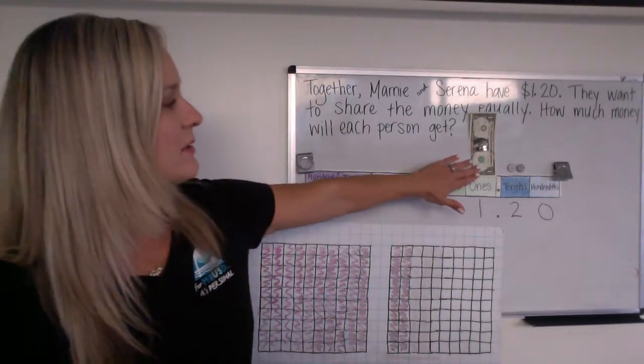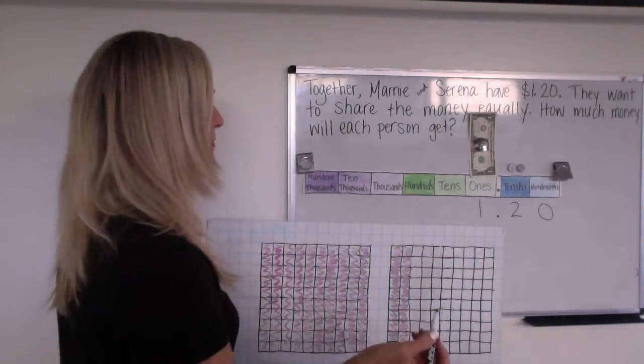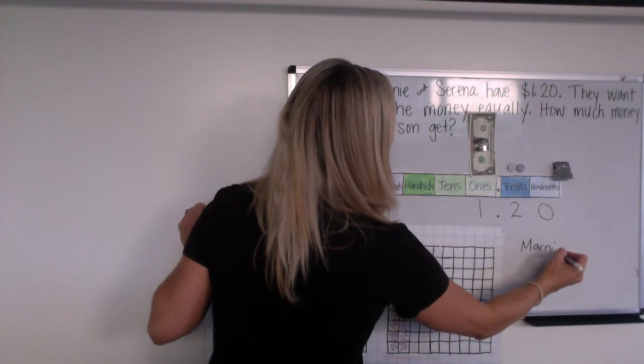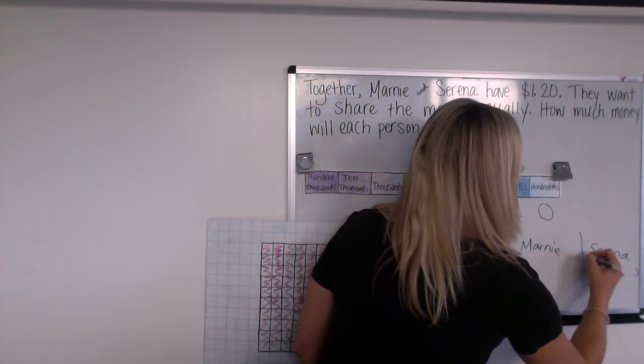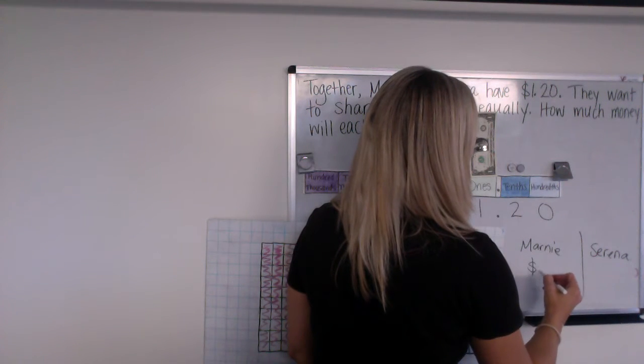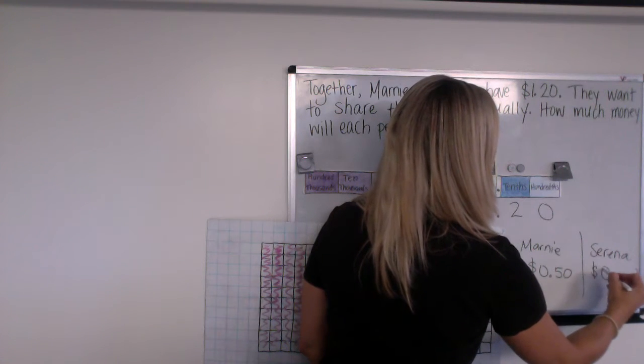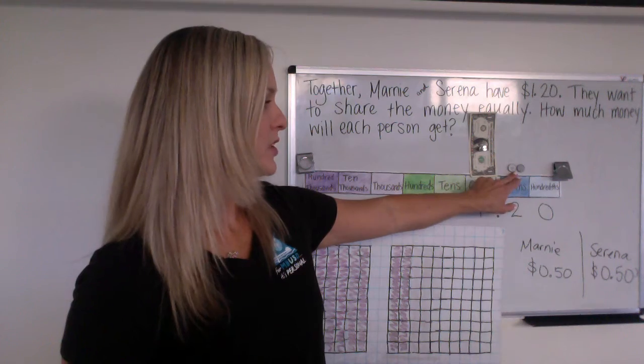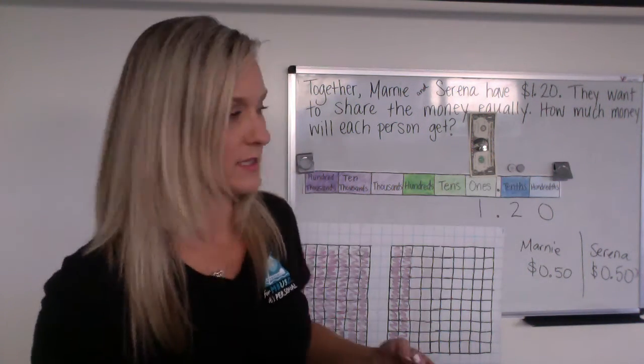So I'm going to take some guesses on how you thought about this. So I'm going to guess that some of you knew that half of a dollar would be 50 cents. So maybe you thought about over here, we've got Marnie and over here, we've got Serena. And maybe you just decided to split up the 50 cents and 50 cents, a dollar into 50 cents and 50 cents rather.